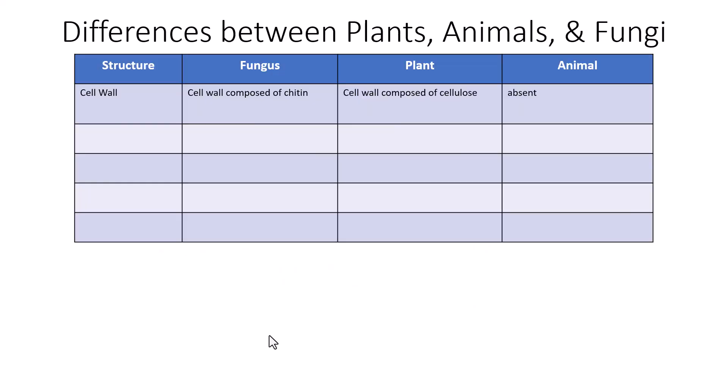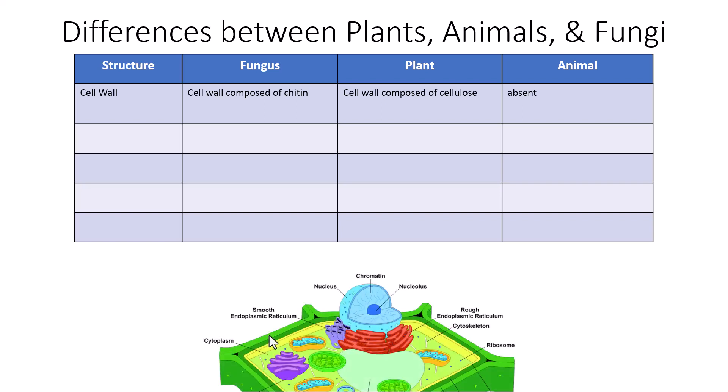All eukaryotes also contain lysosomes, mitochondria, microtubules, the plasma membrane, and cytoplasm. When we begin to talk about differences between plants, animals, and fungi, there are a variety of key differences you need to know.